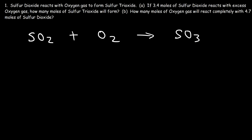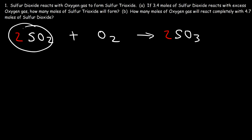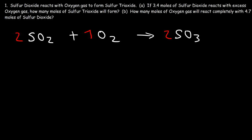Now we need to balance it. The sulfur atoms are balanced on both sides, but we have four oxygen atoms on the left and three on the right. Let's start by putting a 2 in front of SO₂, giving us two sulfur atoms, which means we need to put a 2 in front of SO₃. Now the number of oxygen atoms on both sides is 6: on the right, 2 times 3 is 6; on the left, 2 times 2 is 4 plus another 2 is 6. So we have a balanced chemical equation.